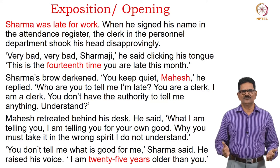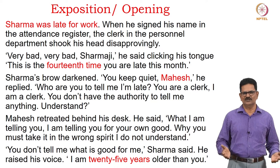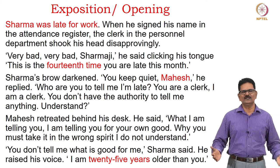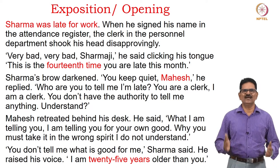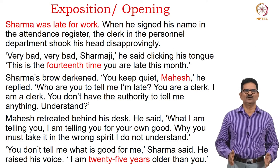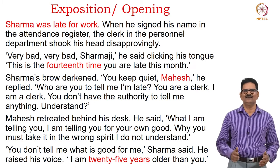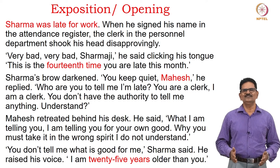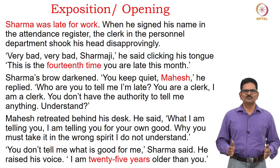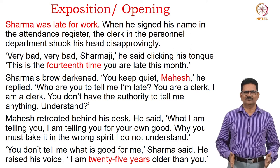We will now read some selected passages from the story. This is the opening: Sharma was late for work. When he signed his name in the attendance register, the clerk in the personal department shook his head disapprovingly. 'Very bad, very bad, Sharmaji,' he said, clicking his tongue. 'This is the fourteenth time you are late this month.' Sharma's brow darkened. 'You keep quiet, Mahesh. Who are you to tell me I am late? You are a clerk, I am a clerk. You don't have the authority to tell me anything.' Mahesh retreated, saying 'I am telling you for your own good.' Sharma raised his voice: 'I am twenty-five years older than you.'